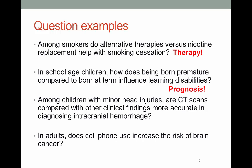The third question looks to compare CT scans with other clinical findings in diagnosing intracranial hemorrhage — again, that one's right there in the title: diagnosis. And the final one: in adults, does cell phone use increase the risk of brain cancer? That is harm or etiology. Not all questions will fit neatly into each question type, but these are the big areas.